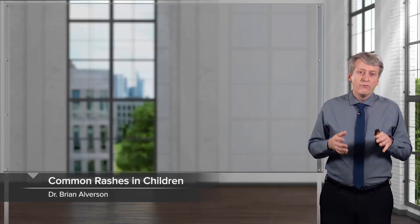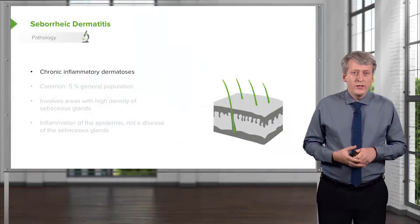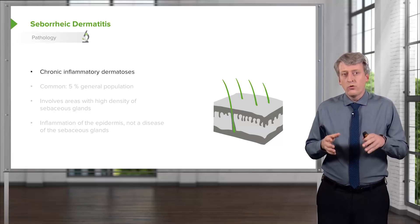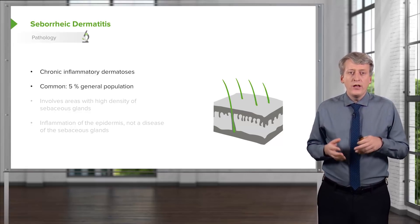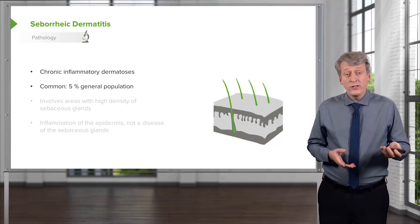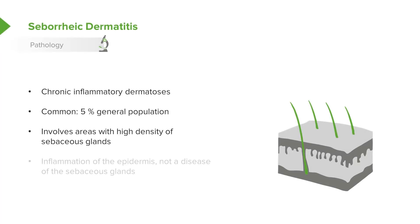In this lecture, we will discuss a variety of common pathologic rashes in children. Let's start with seborrheic dermatitis. This is a chronic inflammatory dermatosis. It's present in about 5% of the general population and in children often involves areas of high density of sebaceous glands around the nose, in the ears, wherever there are sebaceous glands.